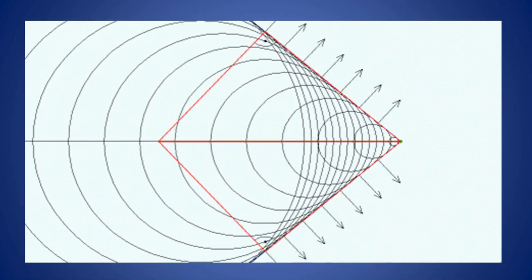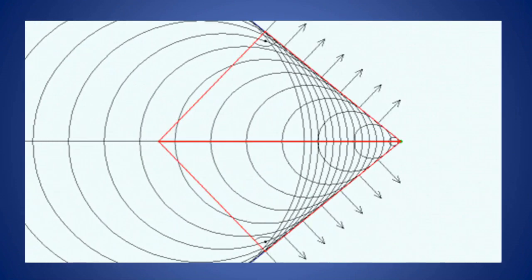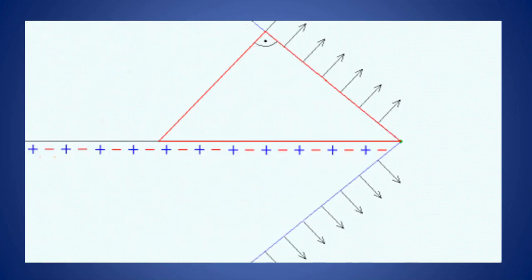This is the animation for Cherenkov radiation. The green color represents the electron, and the ring-like structures that are emitted are the light. That emitted light is Cherenkov radiation. In the animation, the green color is the electron and the ring-like blue color structures emitted are Cherenkov radiation. The electron always moves faster than light — first the electron moves, followed by blue color light emitting. This is known as Cherenkov radiation.